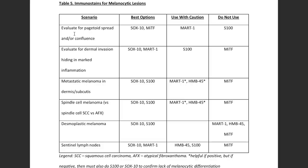There are of course exceptions to every rule. Even though I might normally want Sox10, I might choose Mart1 or something else in a different setting — it depends on every individual case. The remainder of the video is a series of lesions recorded as multiple video clips over multiple different days. I've done my best to arrange them logically, and hopefully these practical examples will give you a better understanding of how I use immunohistochemical stains for melanocytic lesions in my own practice.